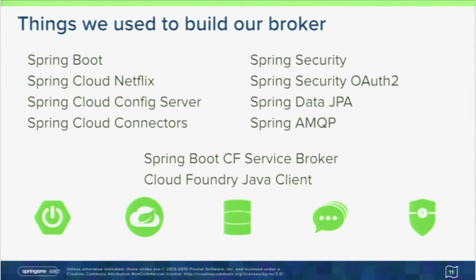All our apps are Spring Boot — the broker app, worker app, and all service instance backing apps. They use different parts of Spring Cloud depending on their functionality. We use Spring Cloud Connectors to talk to RabbitMQ, Spring Data JPA for a little MySQL database tracking provisioned services, Spring Security and Spring Security OAuth2 extensively, and Spring AMQP for all RabbitMQ interaction. We also use Spring Boot CF Service Broker — a Spring MVC application implementing the Service Broker REST API — and Cloud Foundry Java Client for pushing and managing apps via Cloud Foundry's REST API.